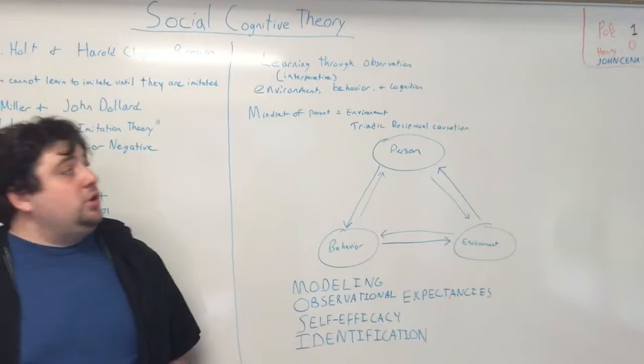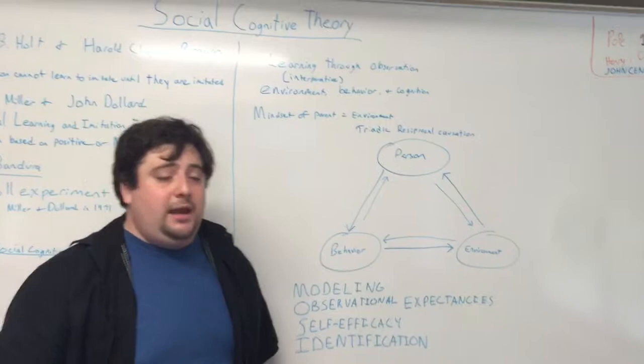Social cognitive theory is based on learning through observation. When you observe something and it receives a positive outcome, you are more likely to imitate that behavior.